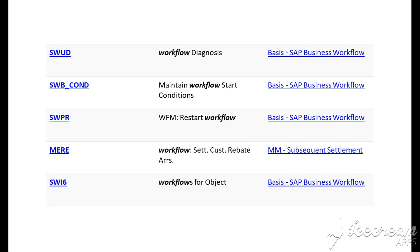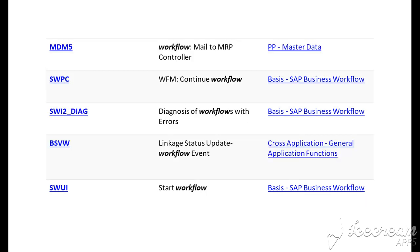SW I6 is for workflow for objects. MDM5 is for workflow mail to MRP controller. SW PC is for continue workflow. WI2_DIAG is for diagnosis of workflows with errors. BSBWW is for linkage status update workflow event.